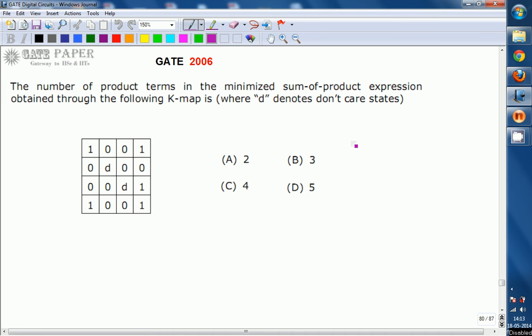So, find the minimized SOP expression, how many number of product terms are there in that one. A2, B3, C4, D5. D implies nothing but don't care.